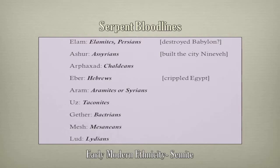First we look at the Semitic groups: Shem's son Elam are the Elamites and Persians; Asher the Assyrians; Arphaxad the Chaldeans; Eber the Hebrews; Aram the Aramites; Perserians; Uz the Tocanites; Gether the Bactrians; Mesa the Masonians; and Lud the Lydians.